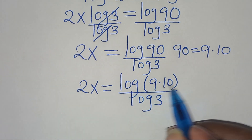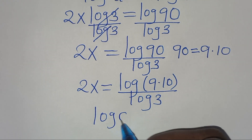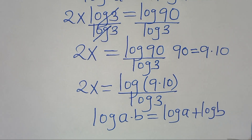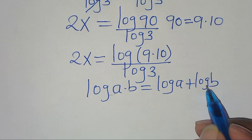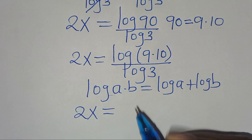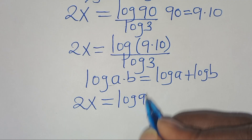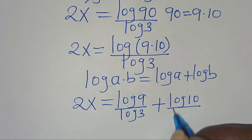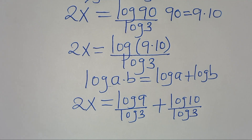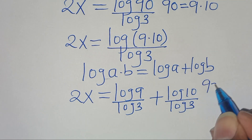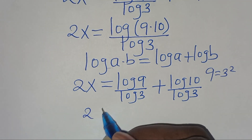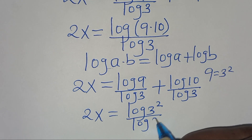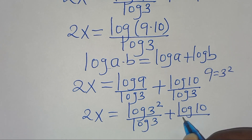We note that log(9 × 10) is in the form of log(a × b), which we can express as log a plus log b. Applying this logarithm property, 2x equals log 9 plus log 10, all divided by log 3. Now we can express 9 as 3 to the power of 2, so 2x equals log(3²) plus log 10, divided by log 3.